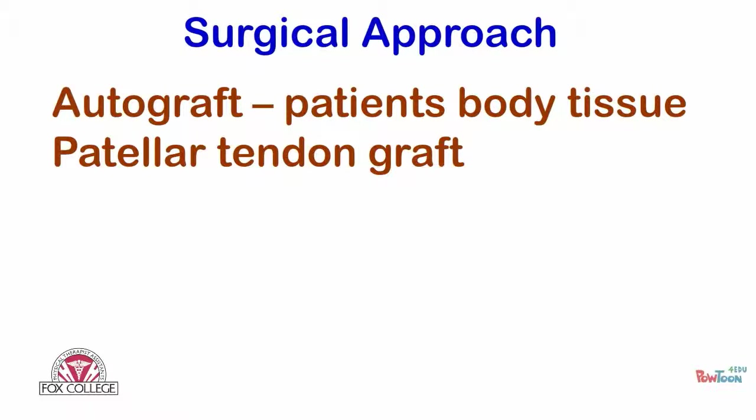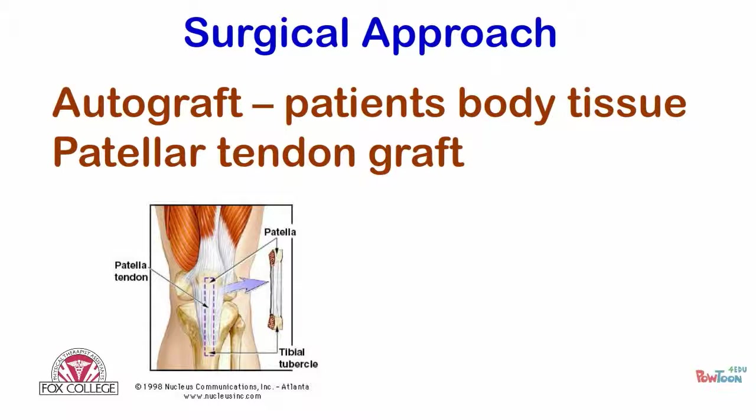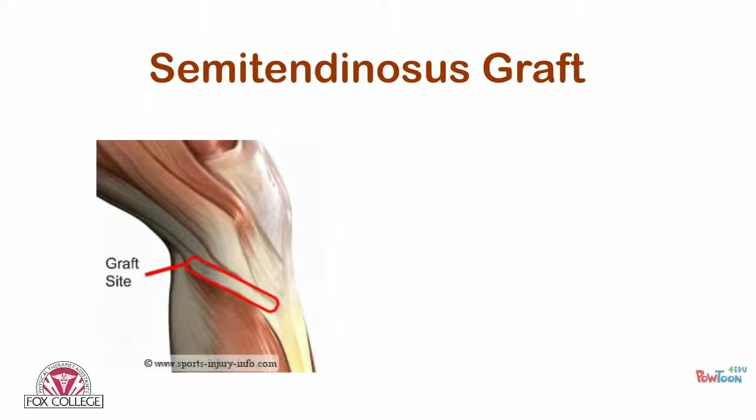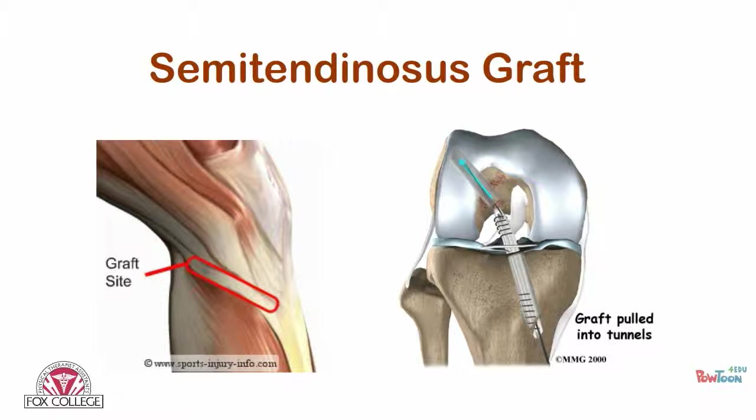The surgical approach will include either an autograft or an allograft. An autograft is where the physician takes the patient's own body tissue, typically the patella tendon, and reroutes it to function as an ACL. The physician might also choose to do a semitendinosus graft, taking part of the hamstring to create a new ACL placed in the tunnel.